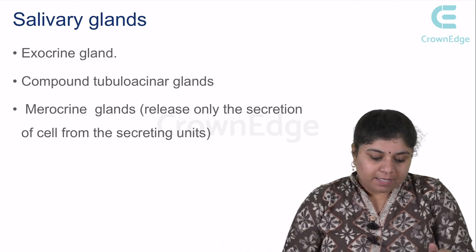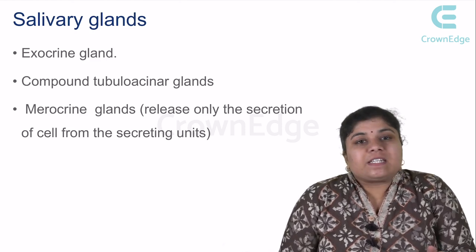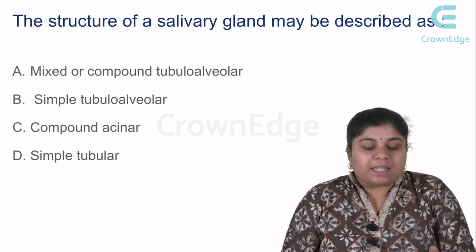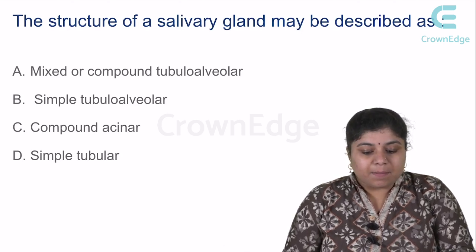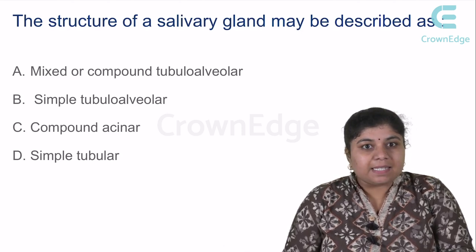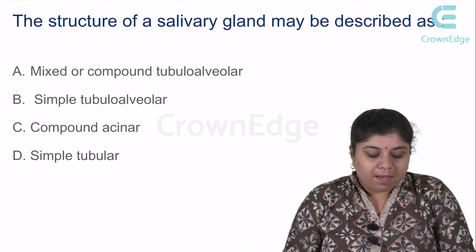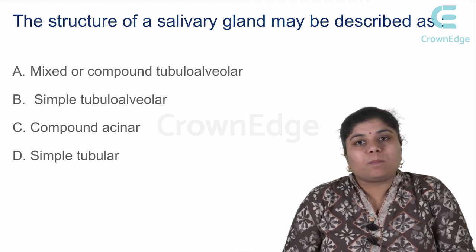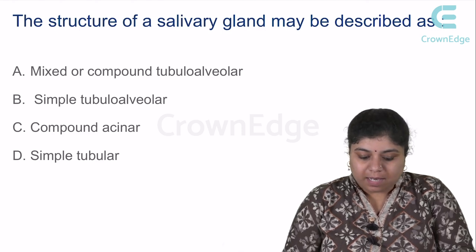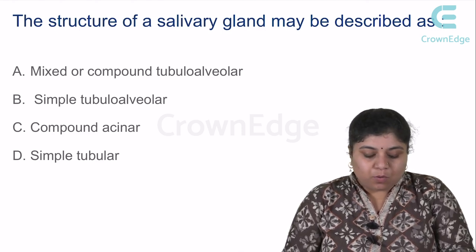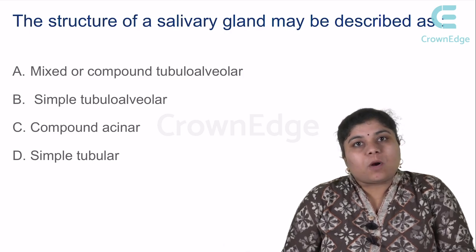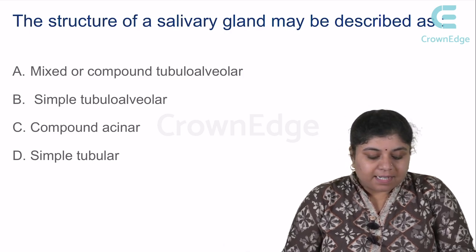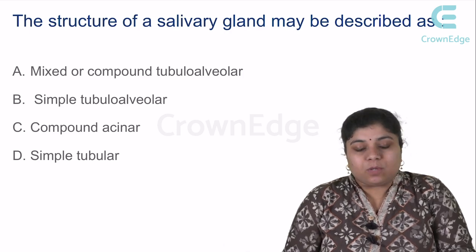Let's go ahead and see a question that has been asked. The structure of salivary gland may be described as: option A — mixed or compound tubular alveolar; B — simple tubular alveolar; C — compound acinar; and D — simple tubular.